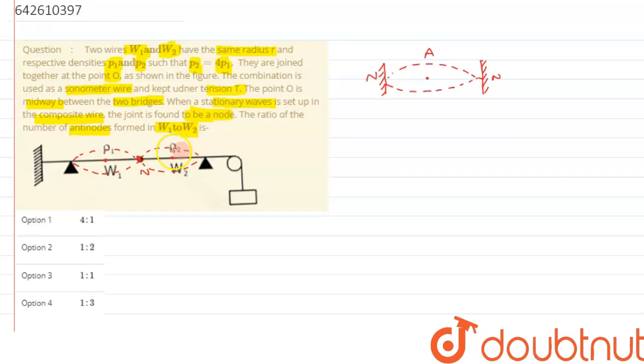We have to calculate basically the ratio of loops, and accordingly that will represent the number of anti-nodes. Just for the sake of understanding I have drawn one loop over here. Actually we don't know how much loop will be formed in wire one and wire two. Let's check. This was just for the sake of understanding.